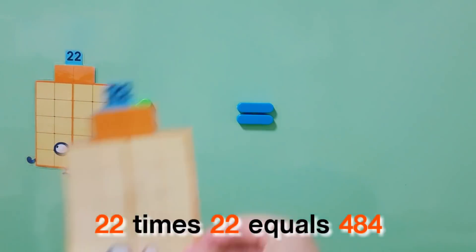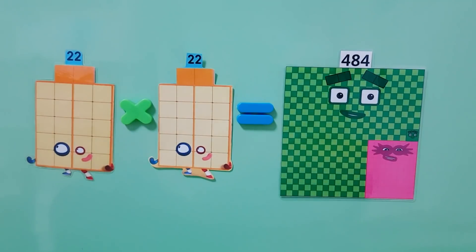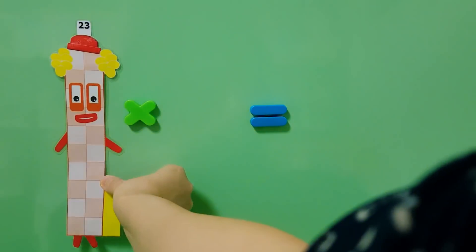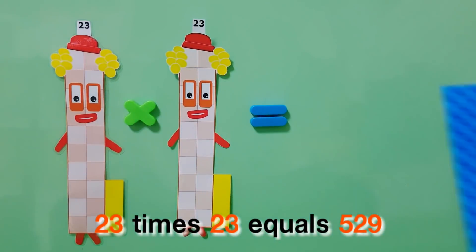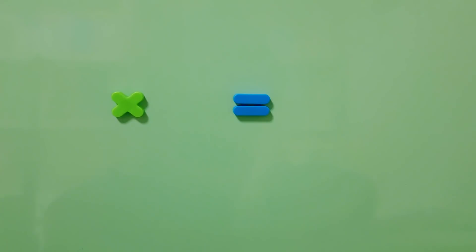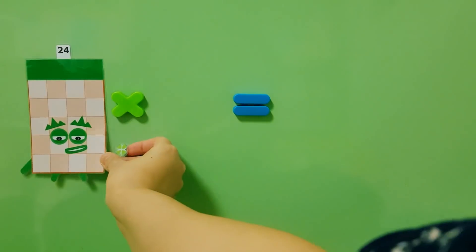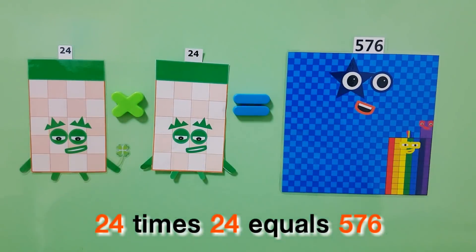22 times 22 equals 484, 23 times 23 equals 529, 24 times 24 equals 576